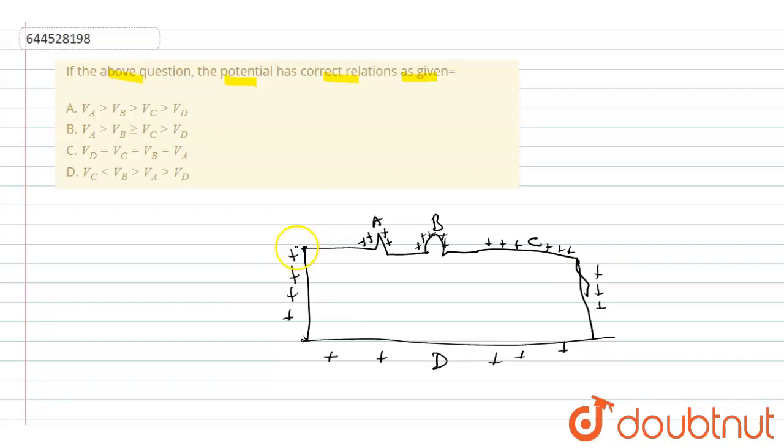And in this question we have to tell potential relation at A, B, C, D. Okay, so here, whatever the distribution of charge density, we know that this is a conductor.